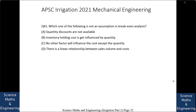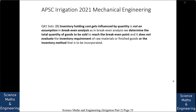Which one of the following is not an assumption in breakeven analysis? (A) Quantity discounts are not available, (B) inventory holding cost gets influenced by quantity, (C) no other factor will influence the cost except the quantity, or (D) there is a linear relationship between sales volume and cost. The answer is: inventory holding cost gets influenced by quantity is not an assumption in breakeven analysis, as breakeven analysis determines total quantity to reach breakeven without evaluating inventory requirements.